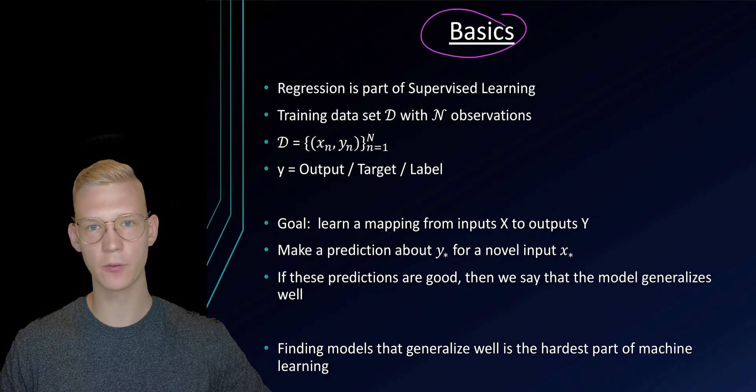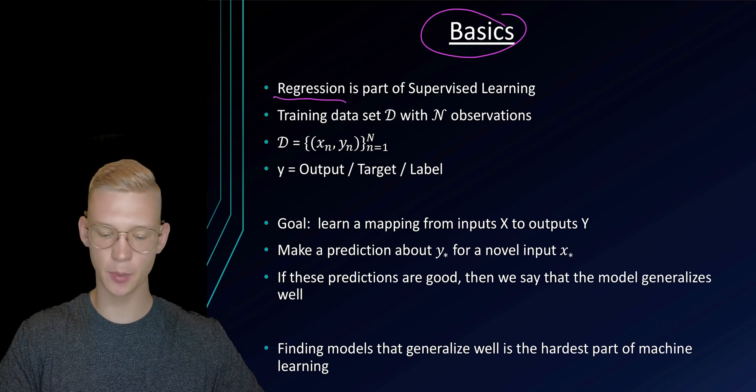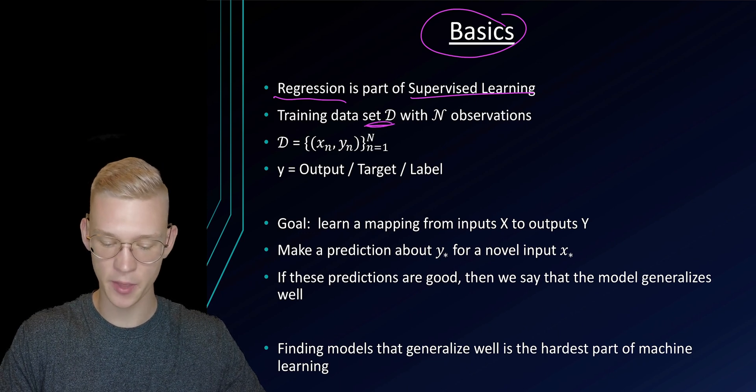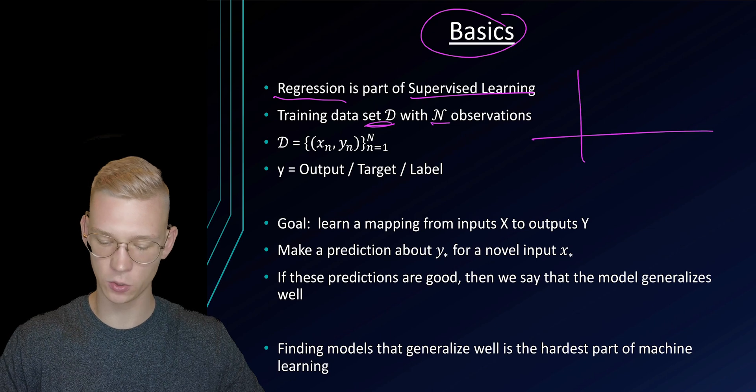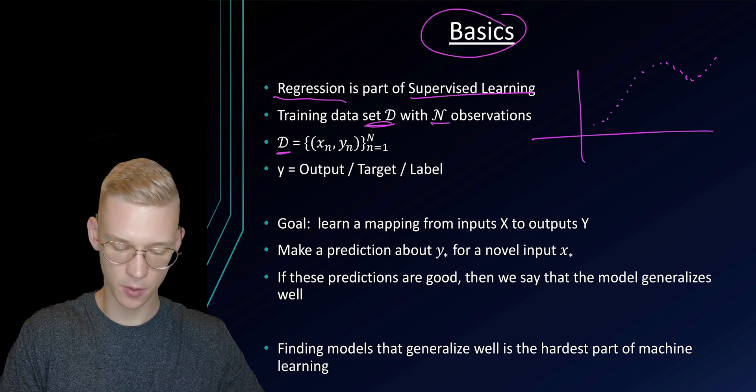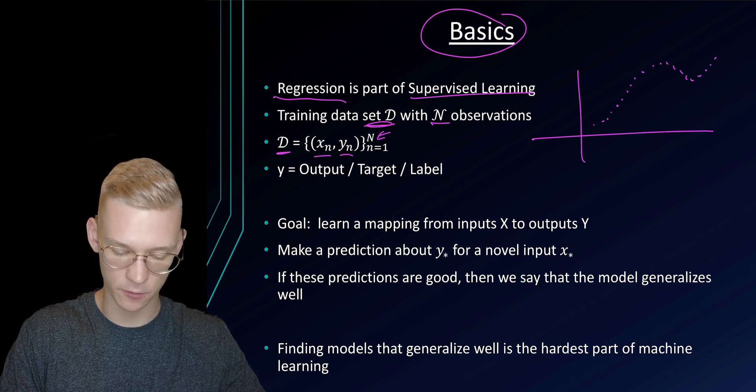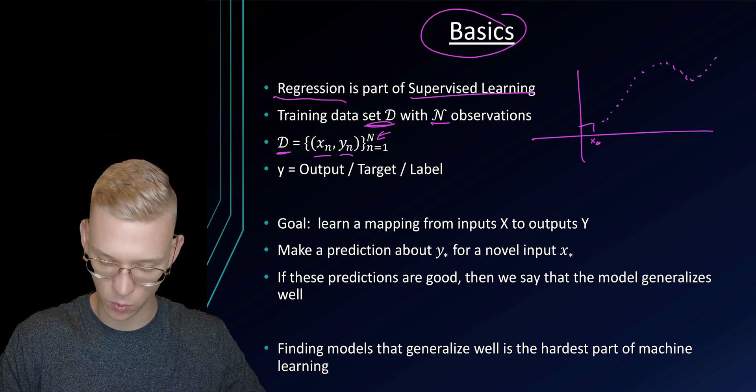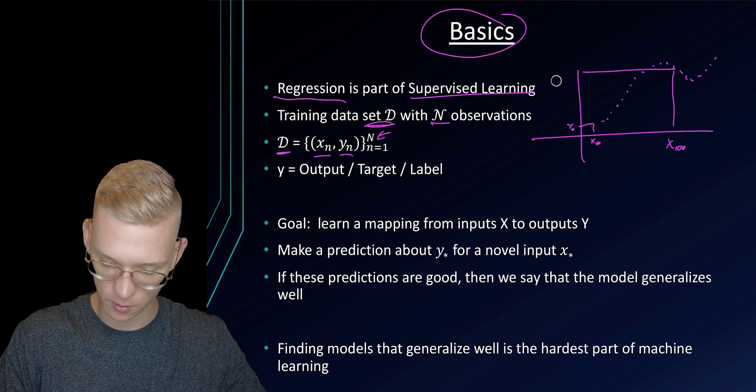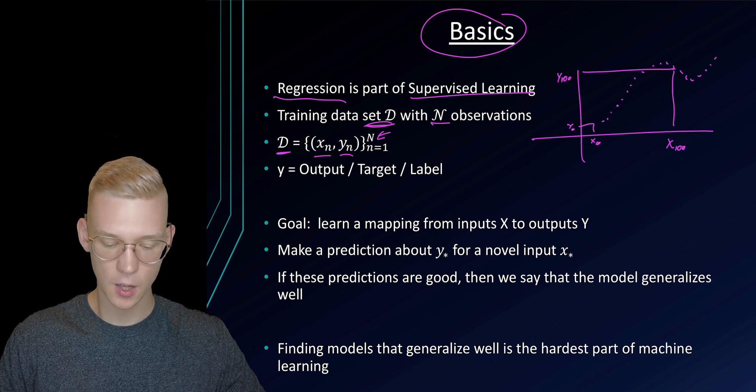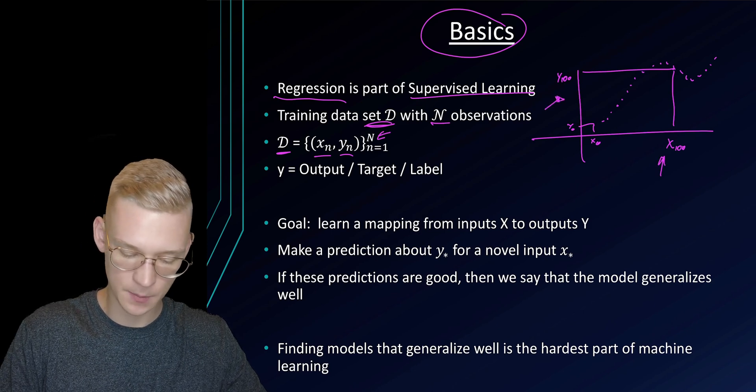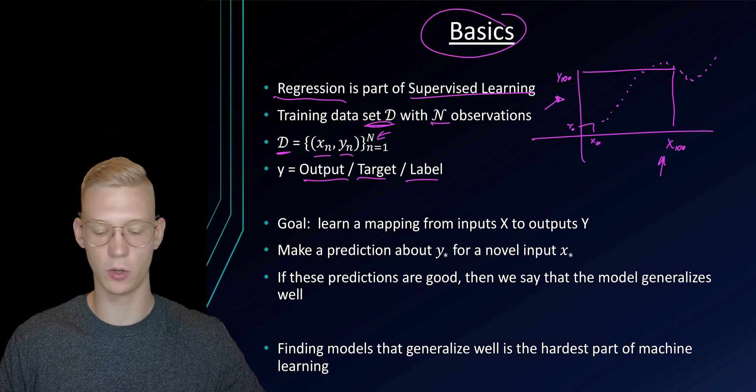So first the basics. We will be covering the topic of regression and regression is part of supervised learning. When we talk about regression we have a data set D with N observations. So for example if we just look at the 2D case we have points. So we have a data set that is made up of x and y and we have N of those. So we have, for example, x₀, y₀ and x₁₀₀ and according to that y₁₀₀. And we will call x our input and the y is our output or sometimes we call it target or sometimes we call it label.